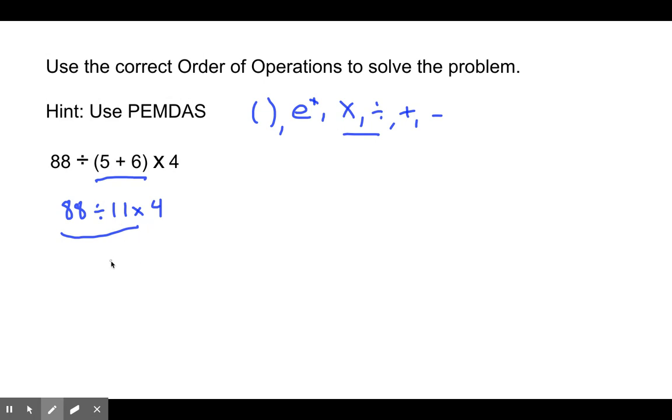88 divided by 11. If we count it by 11, that's 11, 22, 33, 44, 55, 66, 77, and 88. That is 8 times. 8 times 4 now. 8 times 4 is 32. So our answer to this problem is 32.